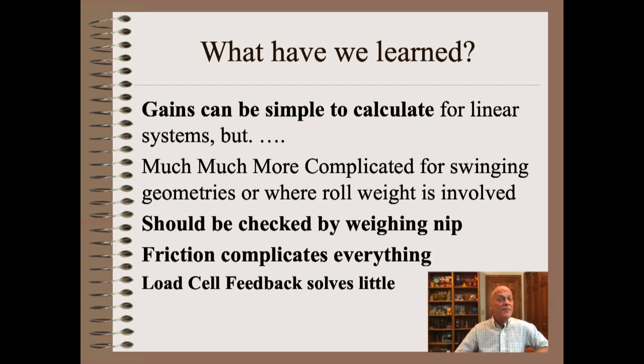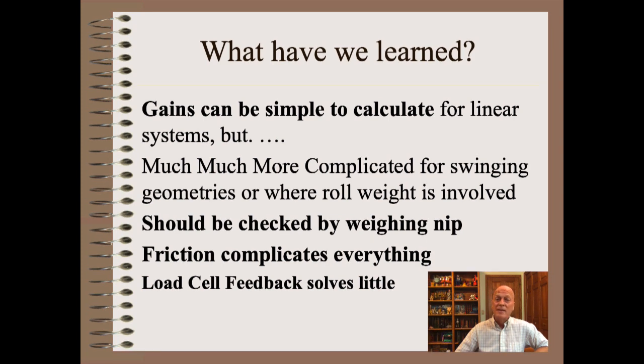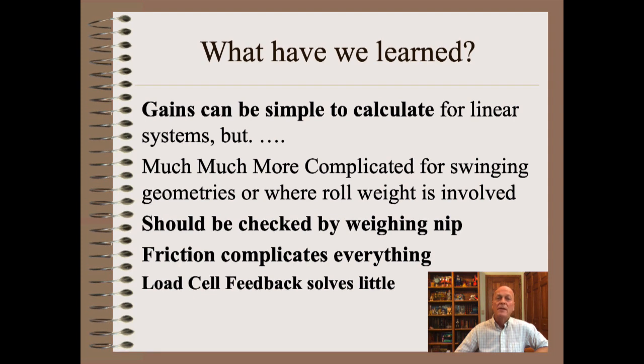So, what have we learned in this clip? First, gains can be quite simple to calculate for direct acting linear systems. For all others, gains can be quite complicated. Second, gains should always be checked by weighing the nip with a force gauge. Third, friction again complicates everything, including gain calibration. Finally, load cell feedback solves little.